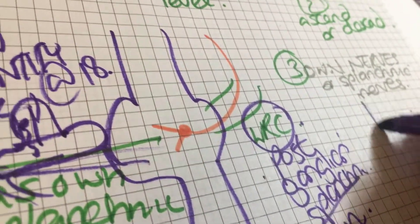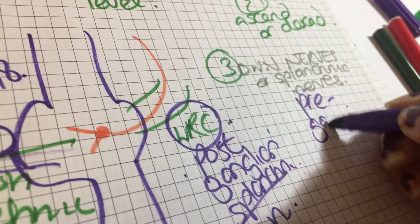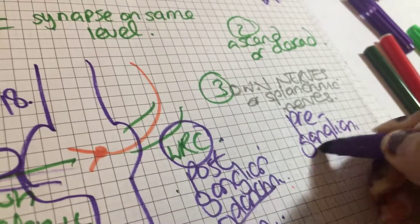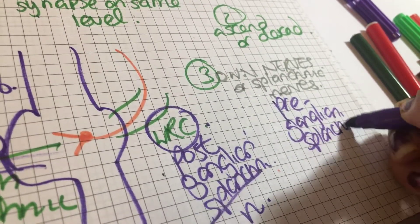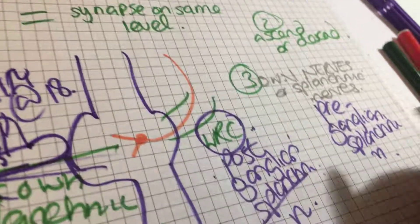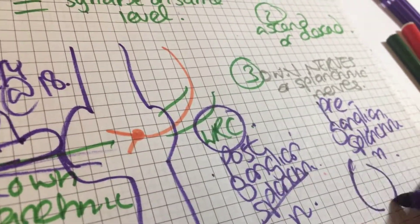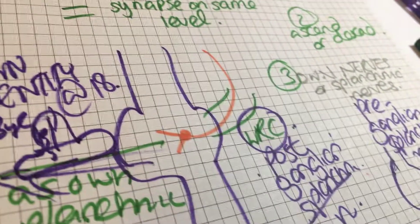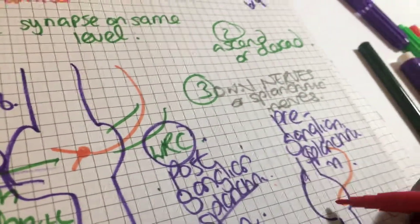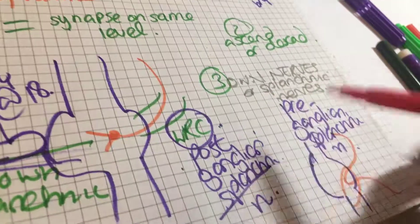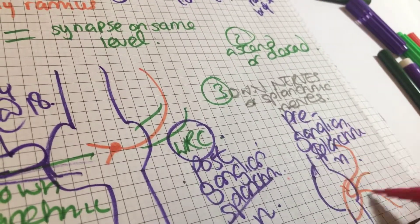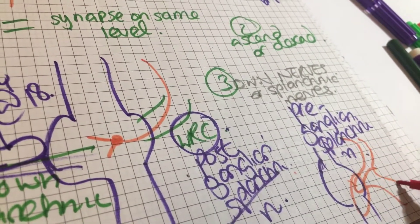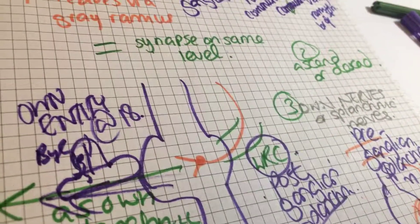Now, the other one is called the pre-ganglionic splanchnic nerve. And this is going to come, it's not even going to come into the ganglion really. It's just going to go like this, and it's not going to synapse at all. So it's just going to be pre-ganglionic splanchnic. I already knew that it was going on its own way, so it was pre.